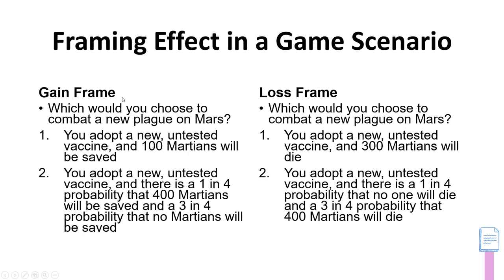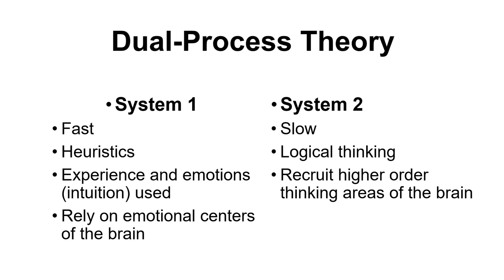Finally, to wrap up this chapter, the dual process theory helps tie many of these concepts together. It states that we have two different systems for processing information. System one is a quick and automatic component of our reasoning — consistent with intuition. It involves fast gut responses, relying on heuristics, drawing on experience, and relying on emotional systems and things we've seen previously.